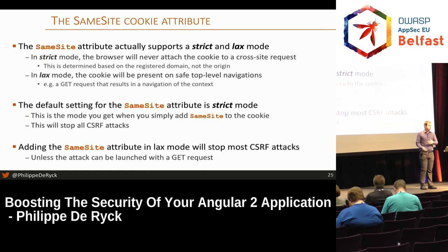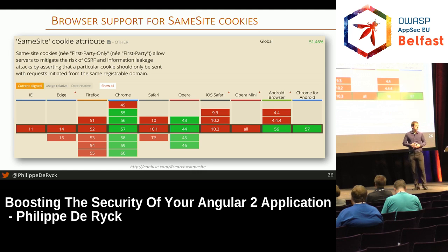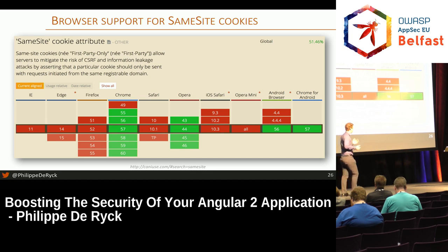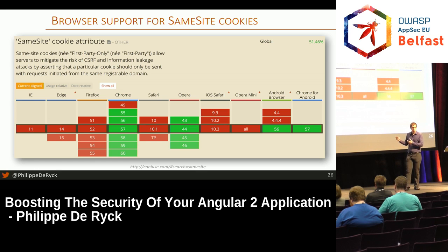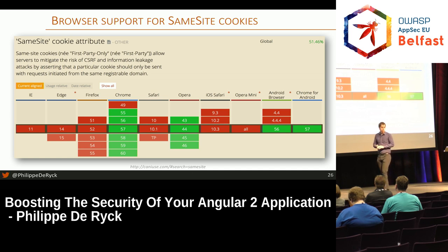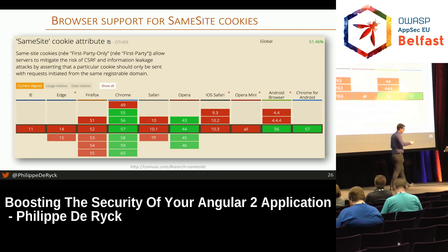In my opinion, this is what cookies should have done from day one. And if you use Lax mode, this will stop almost every CSRF attack that's out there. Only problem: nobody supports it except Chrome and Opera. This will probably pick up in the future. But this doesn't need to stop you from using it. If the browser doesn't know the attribute, it will simply ignore it. So you can start deploying this today to prevent abuse in Chrome and Opera, and benefit from it in other browsers later on.